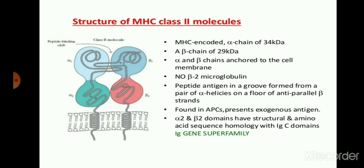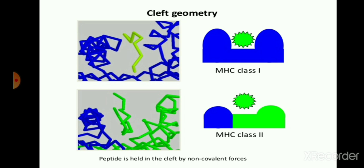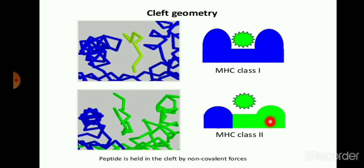Alpha 2 and beta 2 domains have structural and amino acid sequence homology with the immunoglobulin C domain, that is the Ig gene superfamily. Mostly both MHC class 2 and MHC class 1 show immunoglobulin gene superfamily homology. In this figure you can see the structure of MHC class 1 and MHC class 2. We know that the antigen peptide binding site in MHC class 1 has alpha 1 and alpha 2, while in MHC class 2 the binding site contains alpha 1 domain and beta 1 domain.